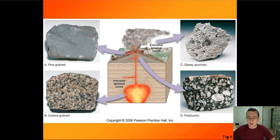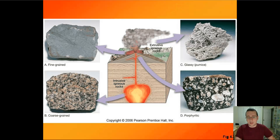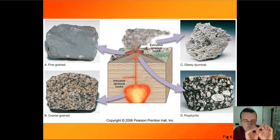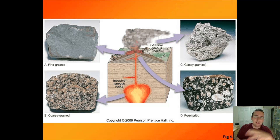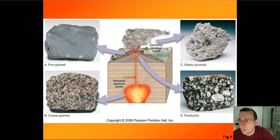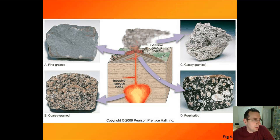Glassy rocks can also form because of very fine mafic eruptions. So glassy rocks will happen either because of explosive eruptions — which create glassy crystals — or from mafic eruptions, which produce rocks that look completely shiny. The best way to learn this is by example, so let's talk about the different kinds of igneous rock.